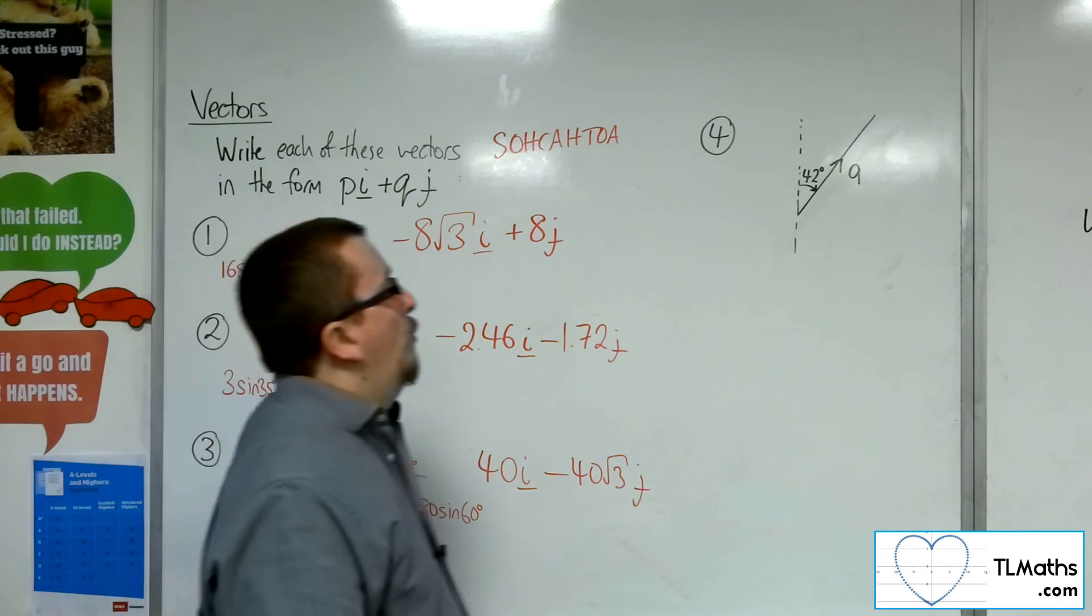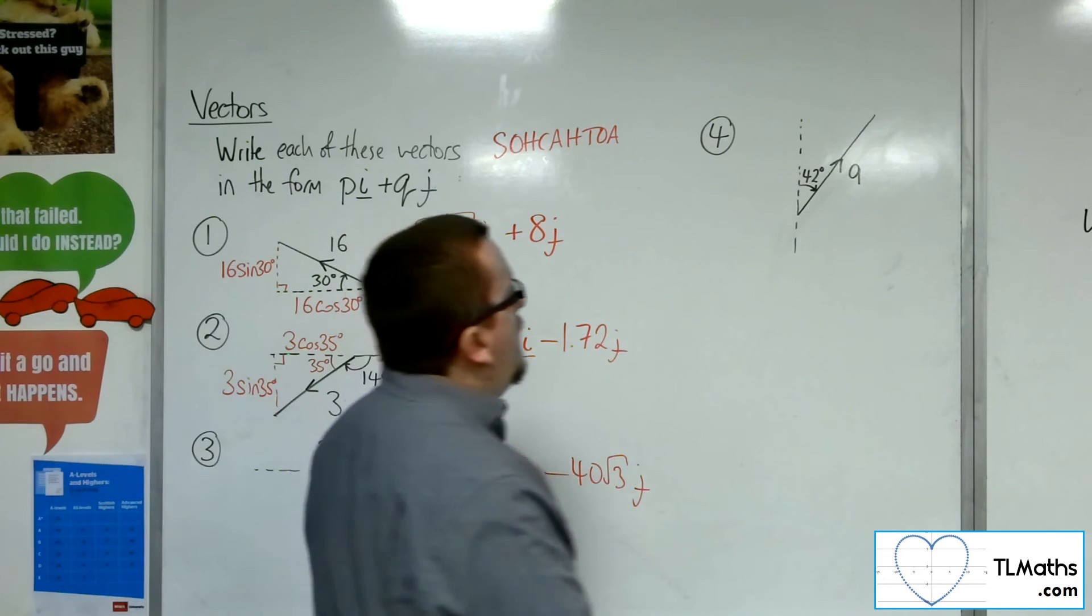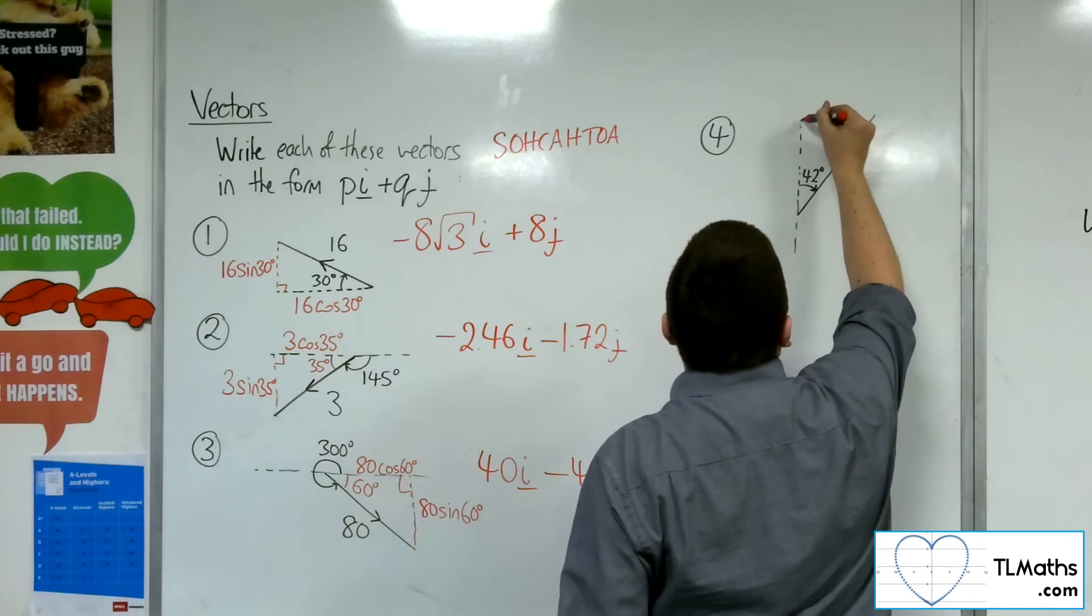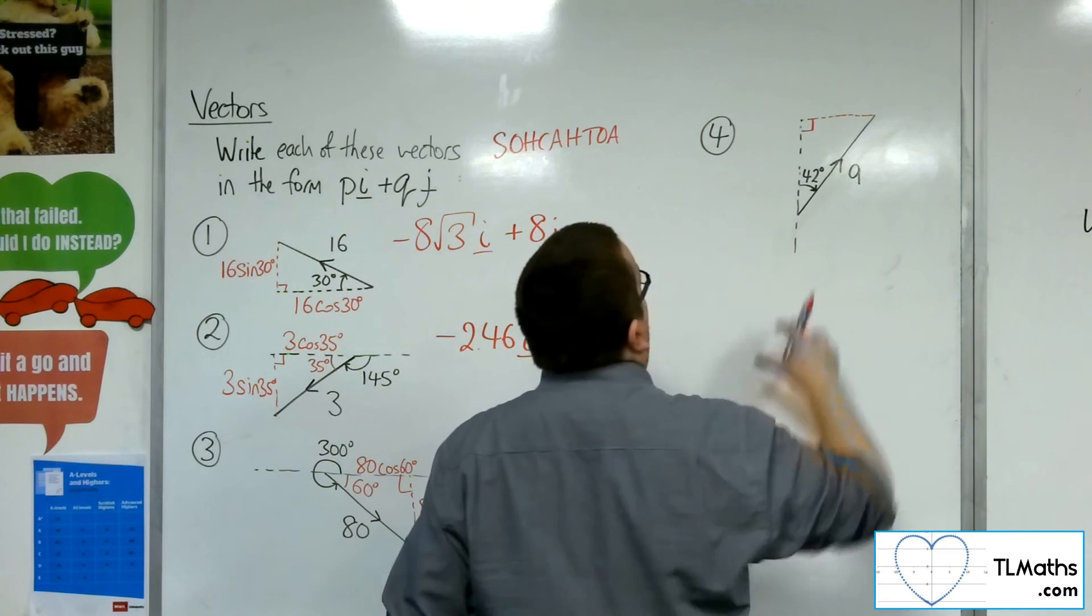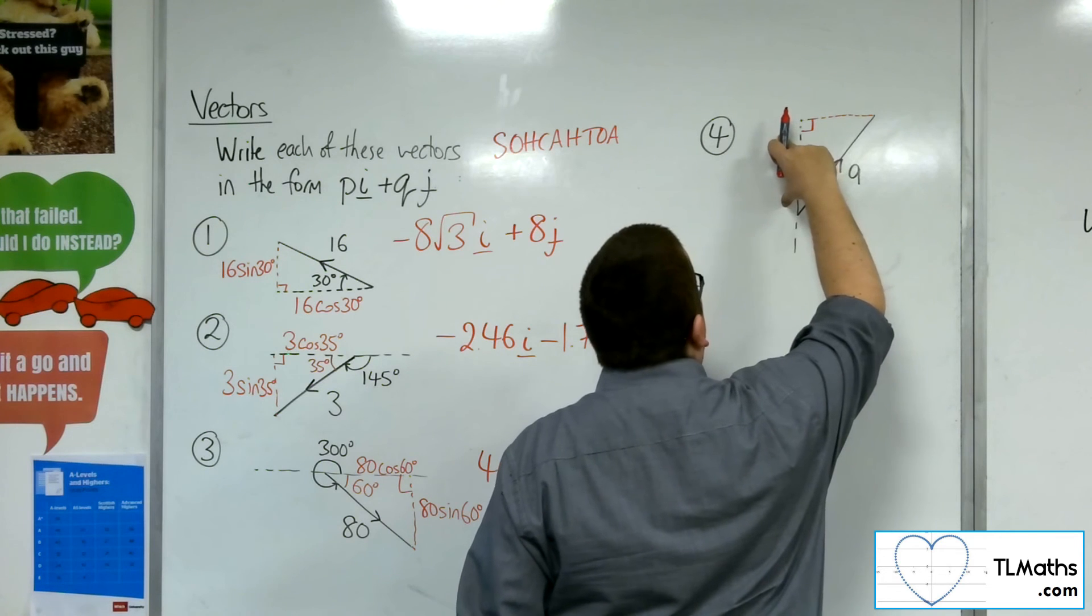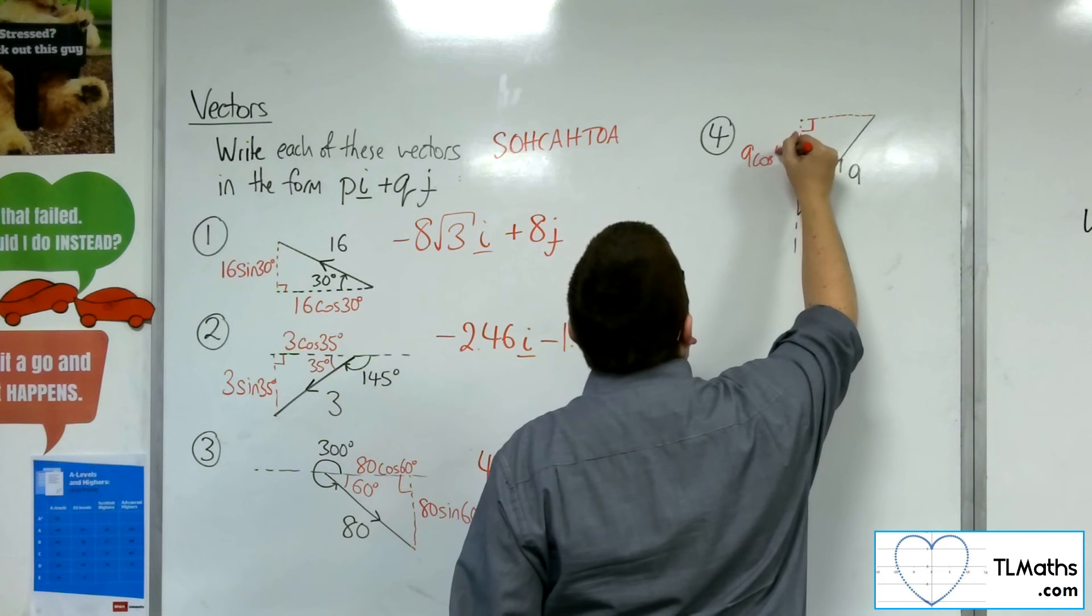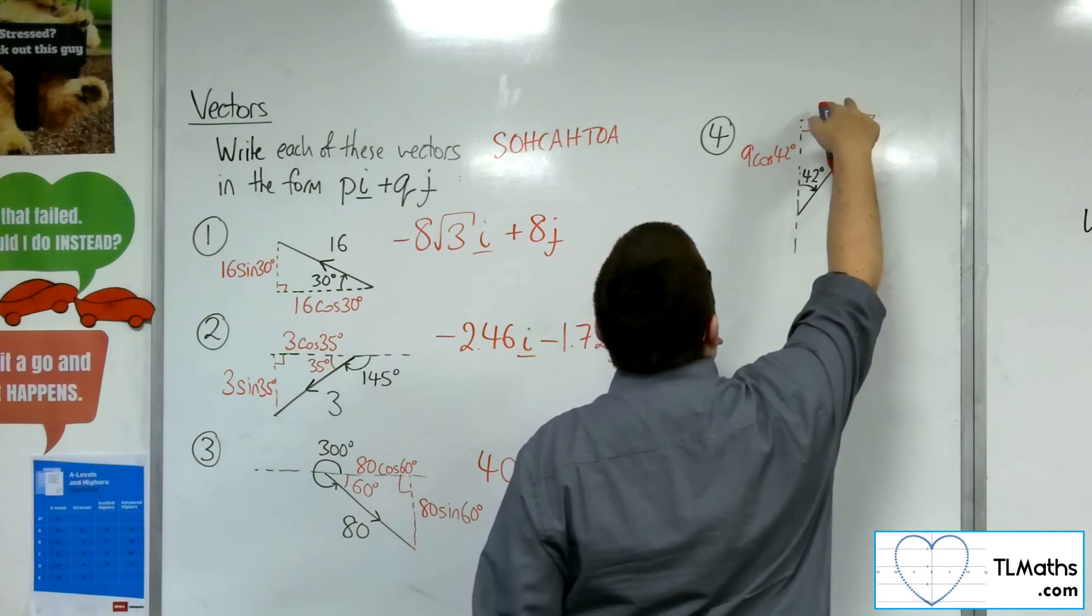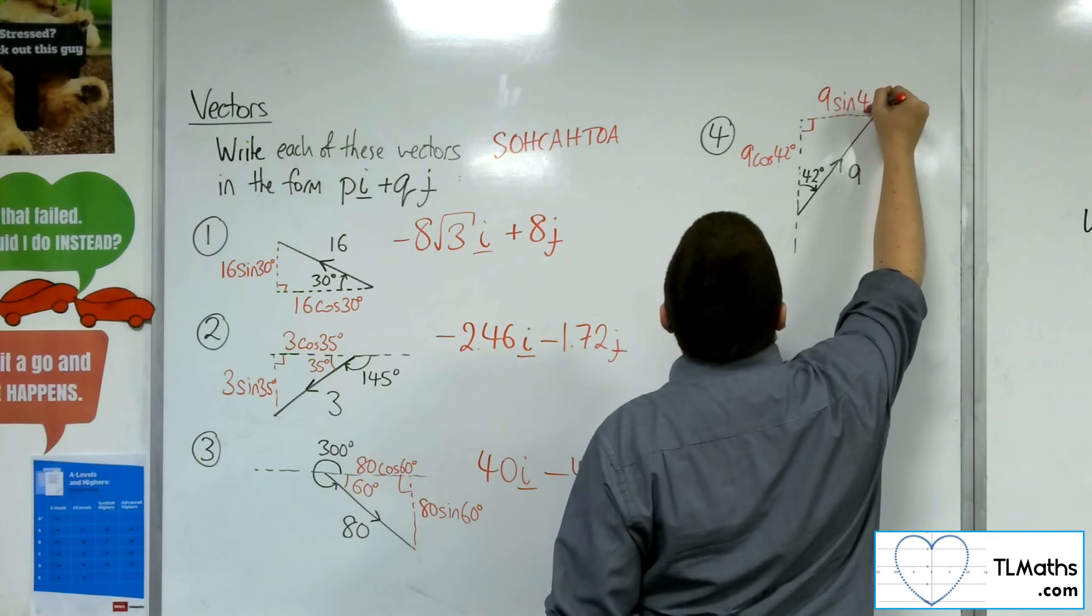Now finally, number 4, this time the angle is measured against the y-axis, okay, but that shouldn't put us off. Okay, so make it into a right-angled triangle. Now, this is the adjacent side this time, okay? So this side will be 9 cosine of 42 degrees. This is the opposite side, so this is 9 sine of 42 degrees.